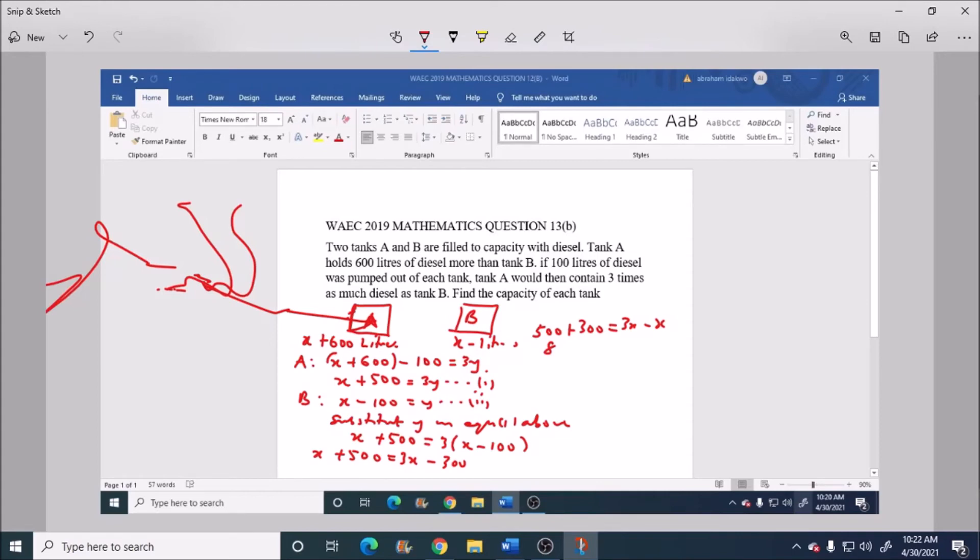Dividing both sides by 2, X is equal to 400 liters.